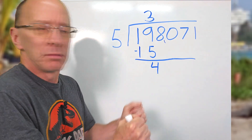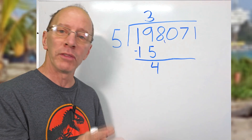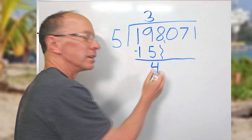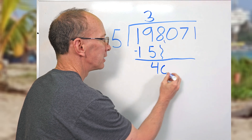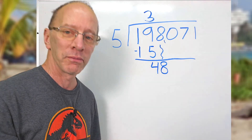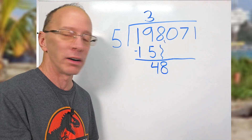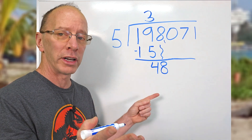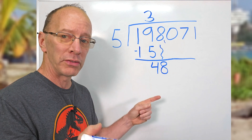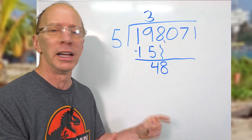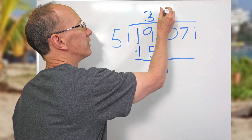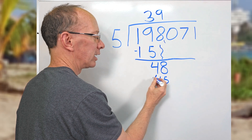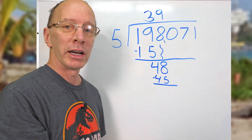Then I go over to the next number and drop it down. Drop it down — put the eight right there. Now we've got 48. We do multiples of five: five times five is 25, five times eight is 40, five times nine is 45, five times ten is 50 — too high. So we'll go with nine. Put the nine right here. Nine times five is 45, and again we subtract: eight minus five is three.